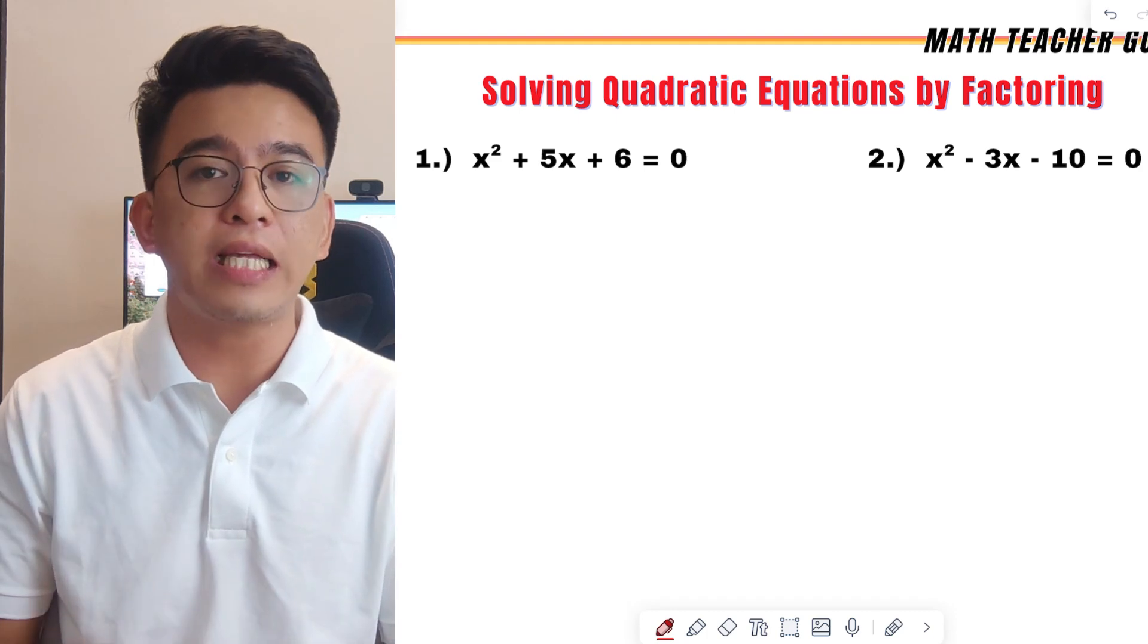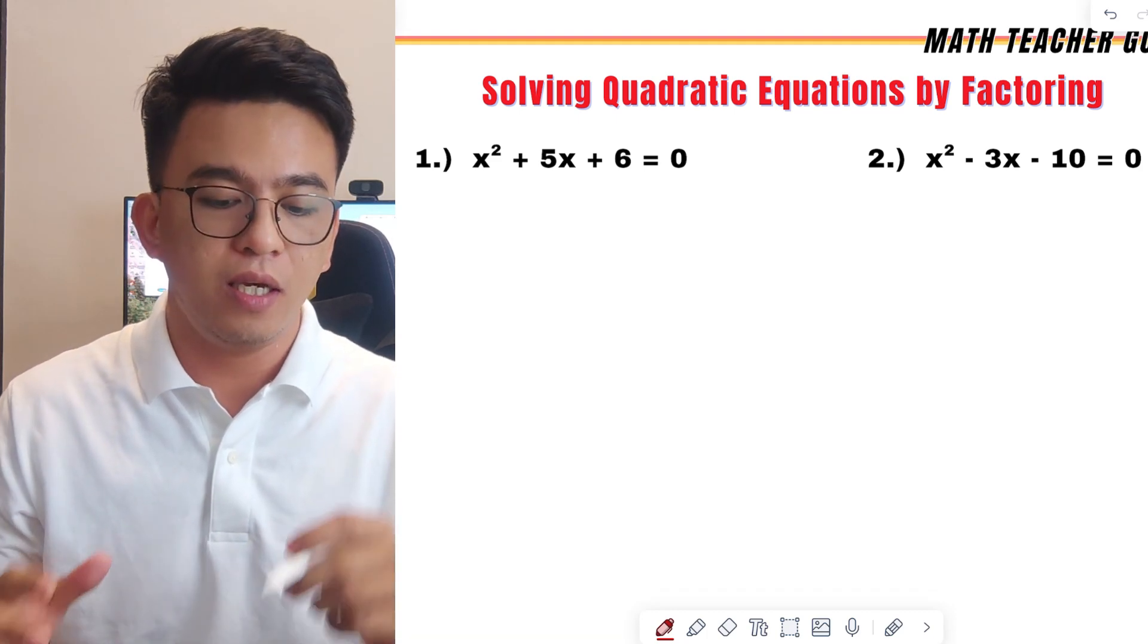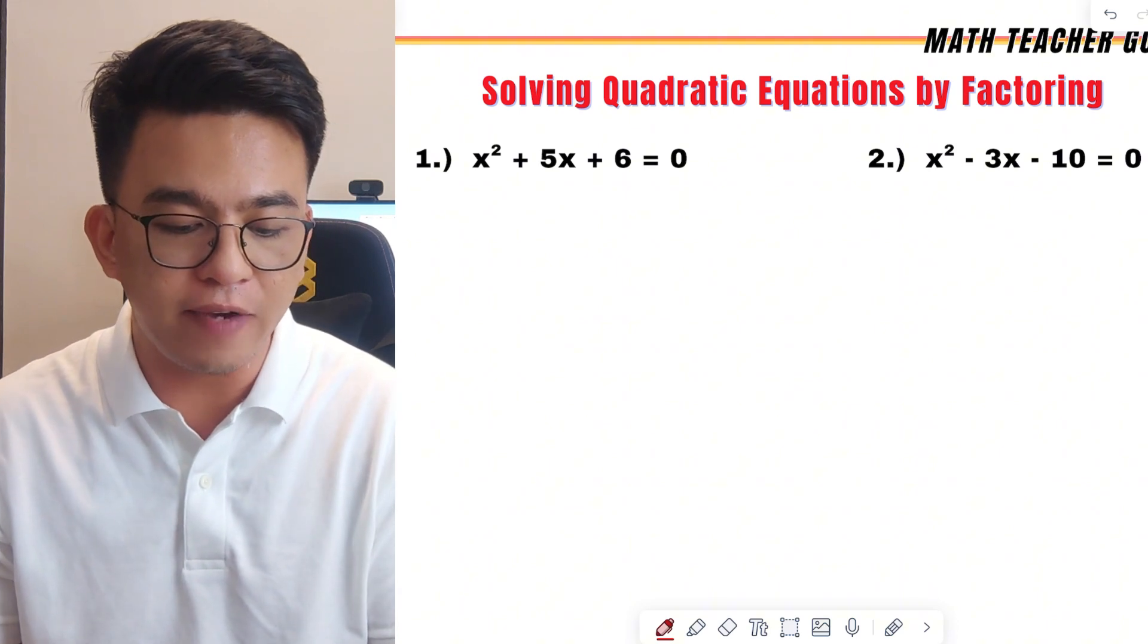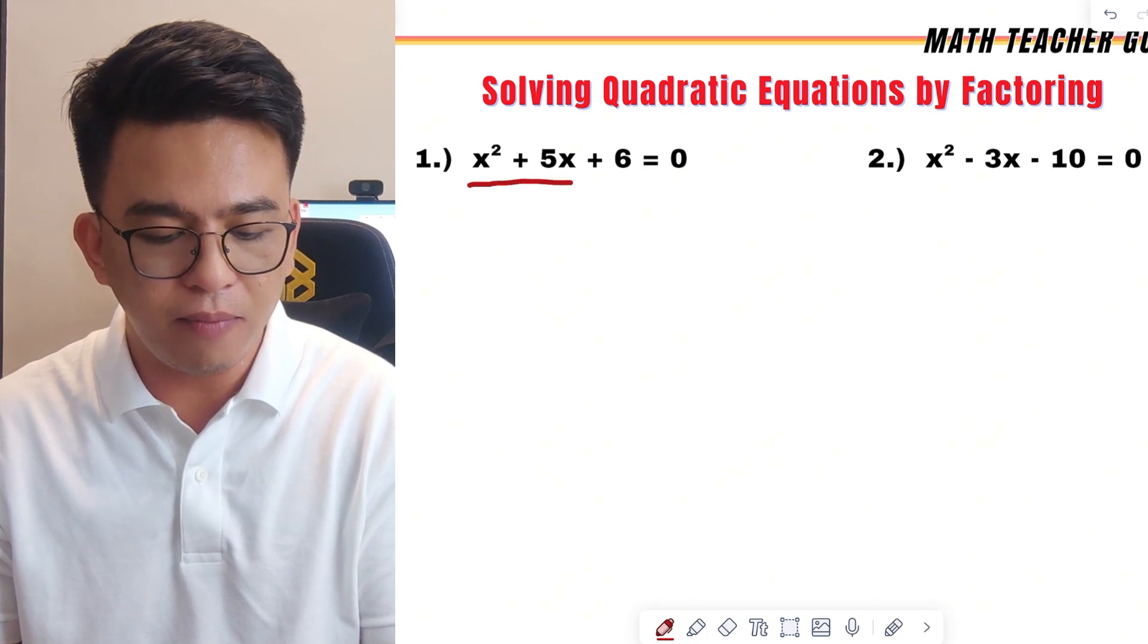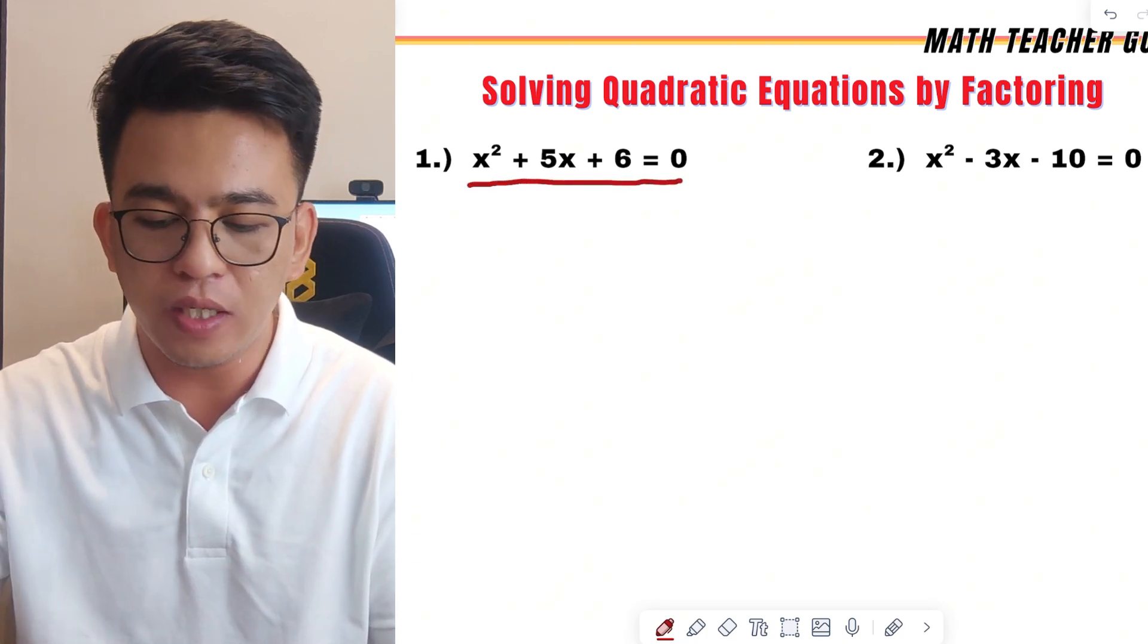Now, factoring is one of the techniques on how to solve quadratic equations. Let us try to find the value of x given this equation, x squared plus 5x plus 6 is equal to 0.